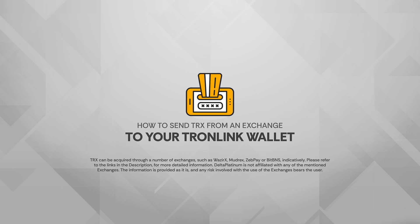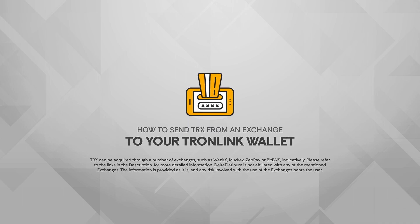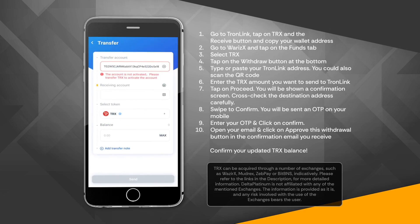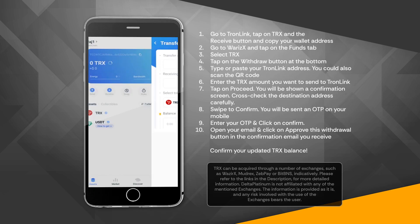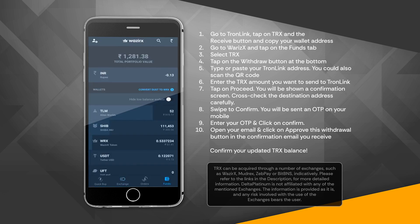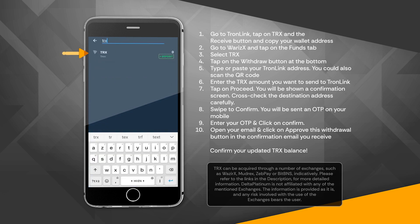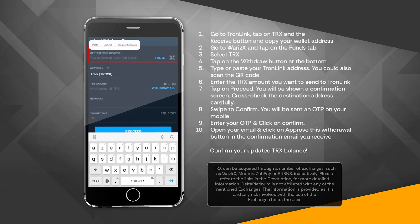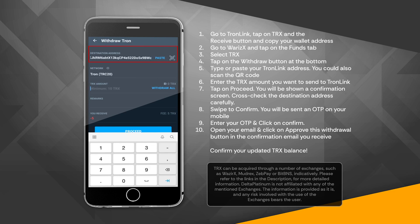Step 4: You are now ready to send these TRX to your TronLink wallet. 1. Go to TronLink, tap on TRX and the Receive button, and copy your wallet address. 2. Go to WazirX and tap on the Funds tab. 3. Select TRX. 4. Tap on the Withdraw button at the bottom. 5. Type or paste your TronLink address — you could also scan the QR code.